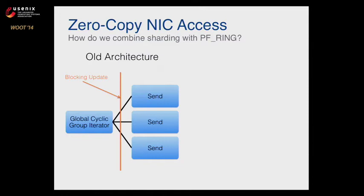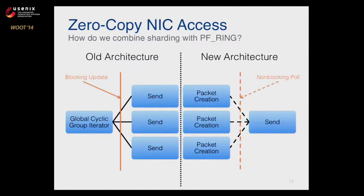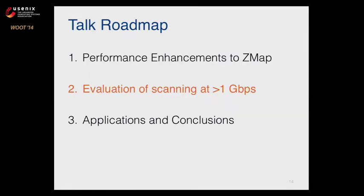To do this we combined the new sharding with PF_RING. PF_RING fundamentally allows only one thread to operate on the interface at a time, which didn't correspond with our old architecture of several send threads all looking at the global cyclic group. So we spun that around by giving each of several packet creation threads their own shard, with a single send thread pulling from all the packet creation threads. The send thread, powered by PF_RING, can then shoot packets out as fast as possible. When we combine all three performance enhancements together, we end up able to scan very fast.